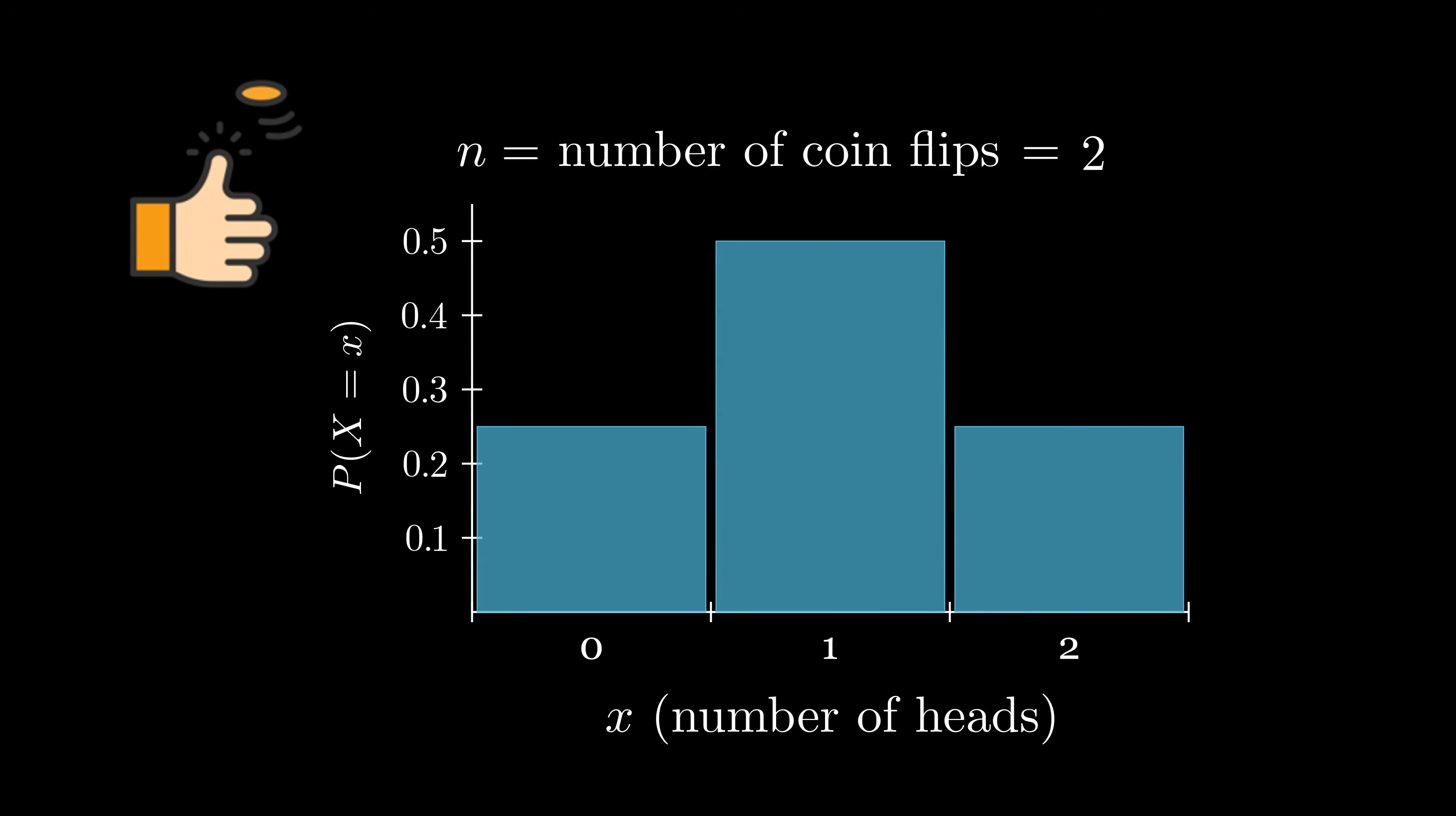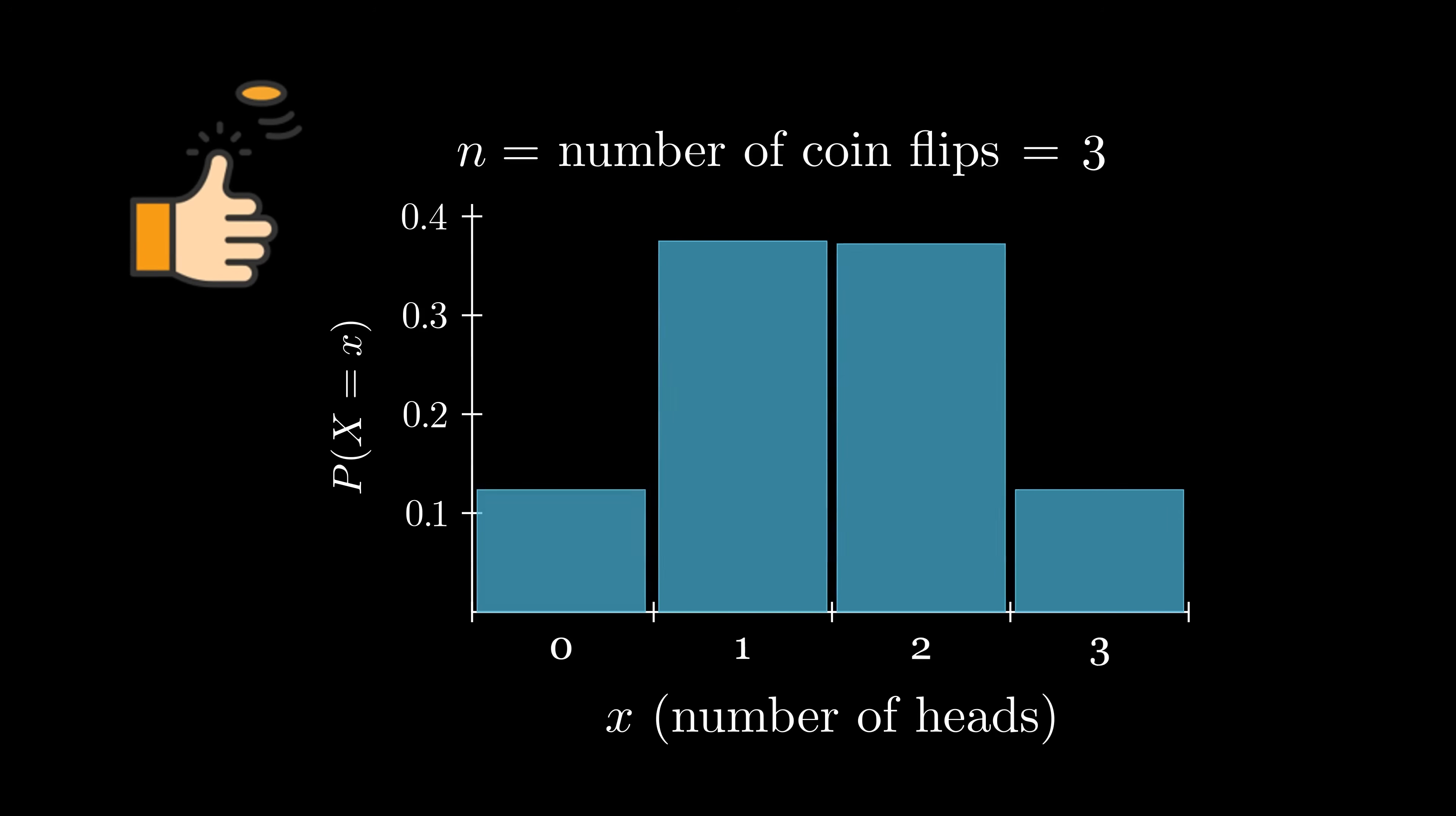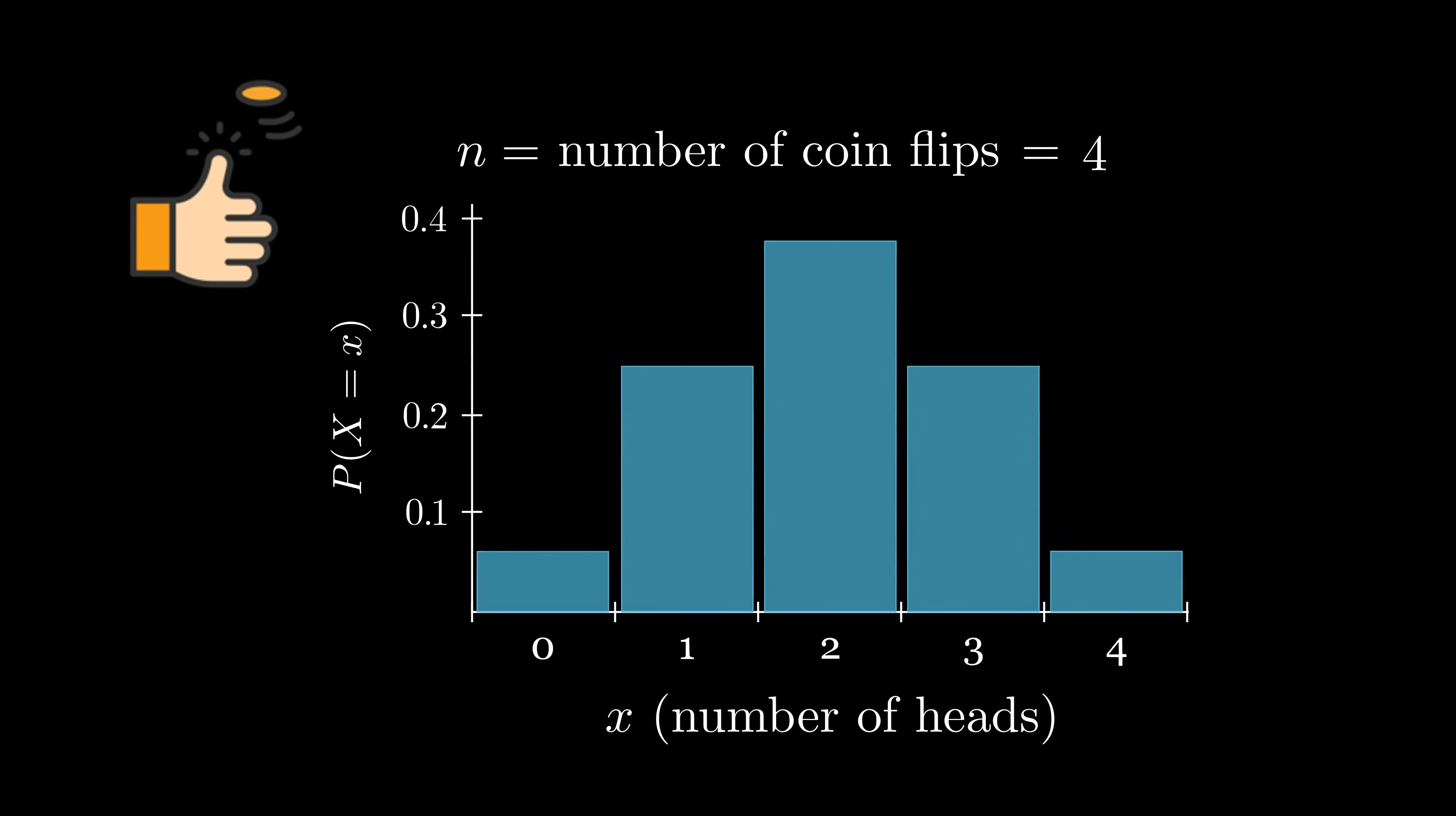In fact, we can generalize this distribution for any number of coin flips. If we let n represent the number of coins we flipped, we can see how the probability distribution of the number of heads increases as we increase n.